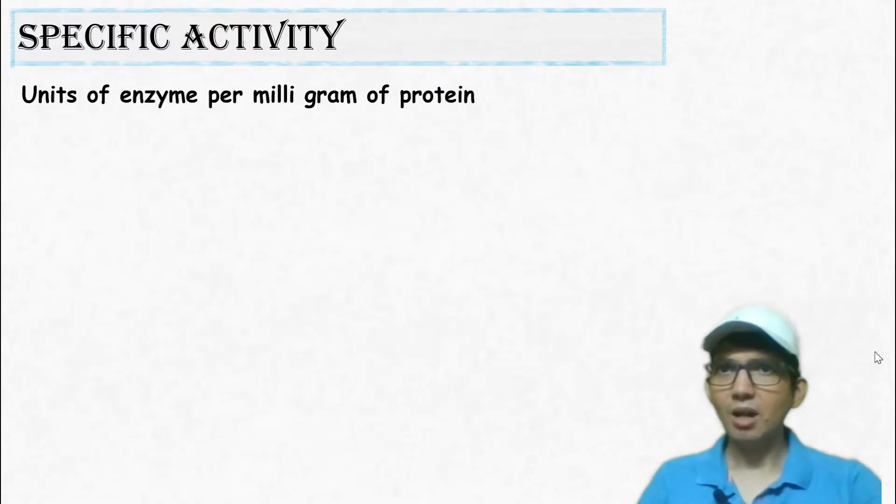Specific activity of enzyme is defined as the number of units of enzyme present per milligram of protein.